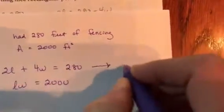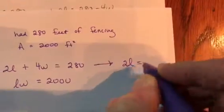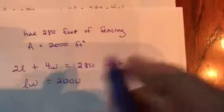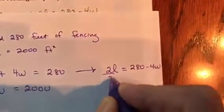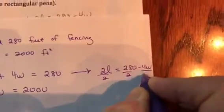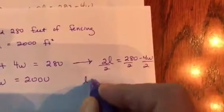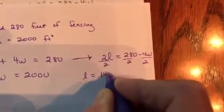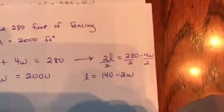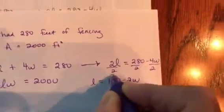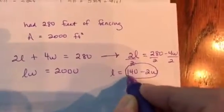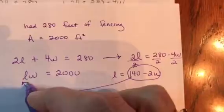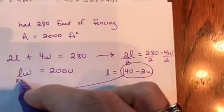So over here, I would have 2L, I'm going to move the 4W to the other side. So it would be 280 minus 4W. If I divide everything by 2, because I want to get the L by itself, I've got L equals 140 minus 2W. That's what L equals. So I'm going to take what L equals, this is algebra 1 right here, I'm going to substitute it in to the other equation where I see an L.